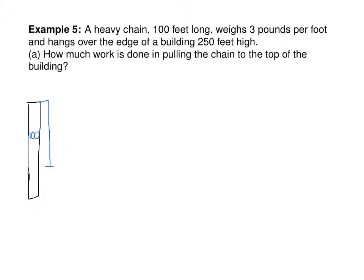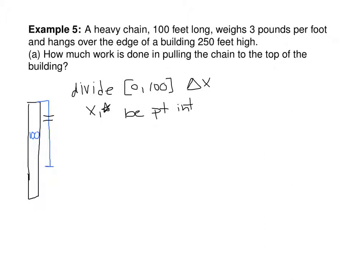Suppose we have a heavy chain that is 100 feet long, weighs 3 pounds per foot, and hangs over the edge of a building that is 250 feet high. How much work is done in pulling the chain to the top of the building? We divide the interval from 0 to 100 into n pieces of width delta x, and let x sub i star be a point in the interval from x sub i minus 1 to x sub i. The work to move a small bit of chain, called w sub i, equals the force times the distance.